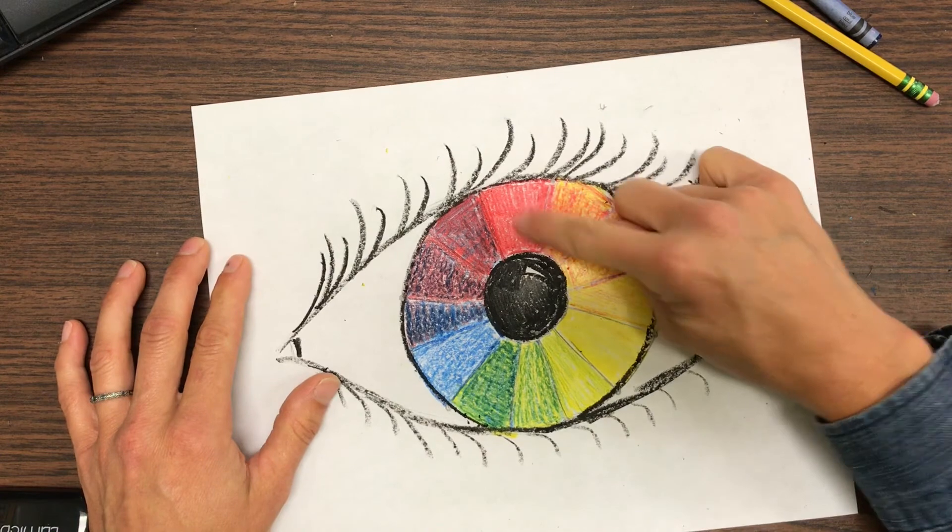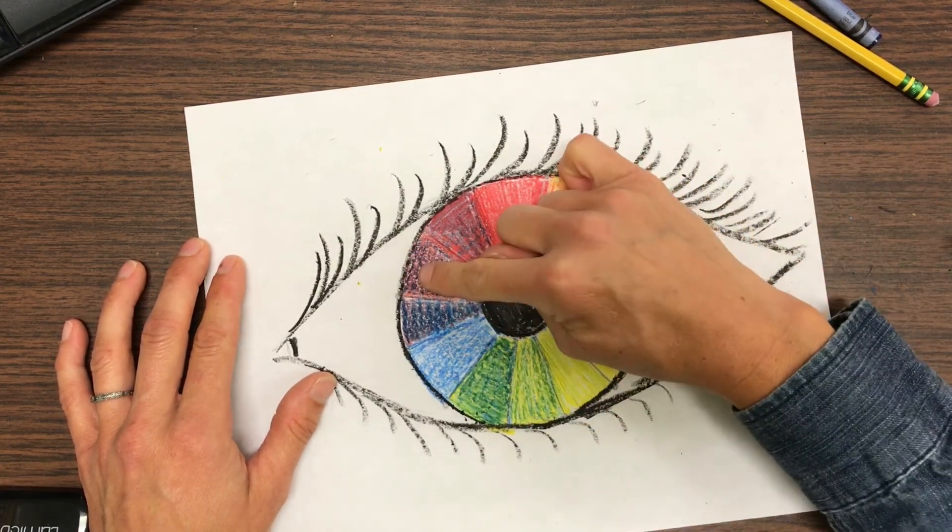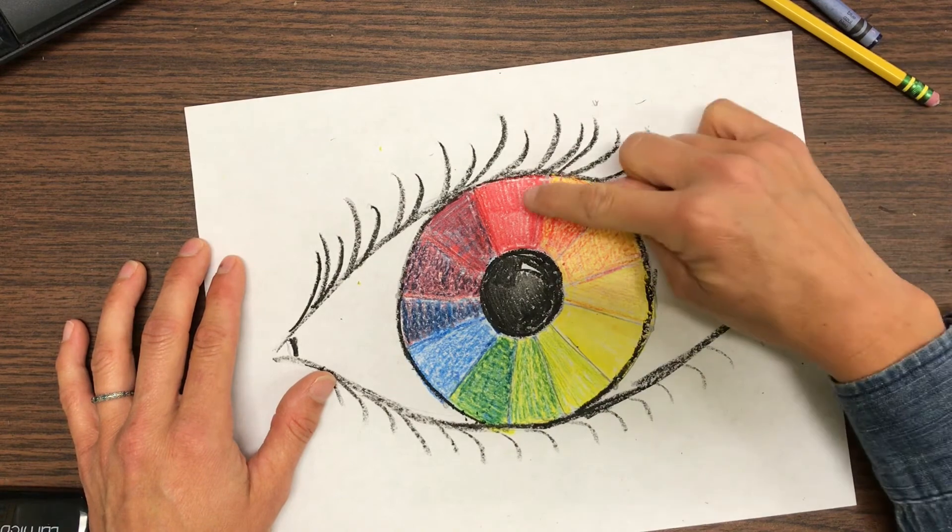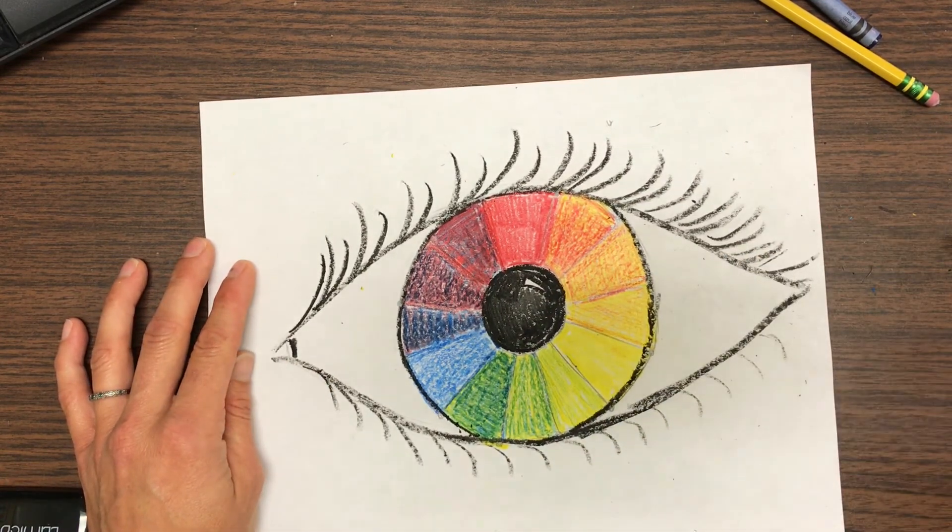I have a color wheel with the primary: red, yellow, blue. The secondary: orange, green, and purple. And the intermediate colors all in between the primary and secondary. Have fun!